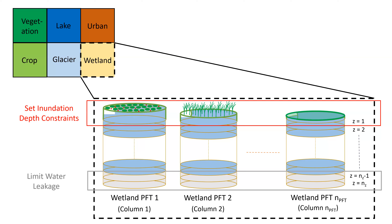One main difference we made compared to the typical soil column forming a vegetation land unit is that we decided to have each soil column represent a different vegetation or patch type. We did this so we can prescribe different hydrological constraints or properties for each plant functional type, since hydrology is resolved at the column level. We limited water leakage at the bottom two soil layers and set surface water elevation constraints — either a maximum inundation depth or by forcing surface water depth using a time series input.